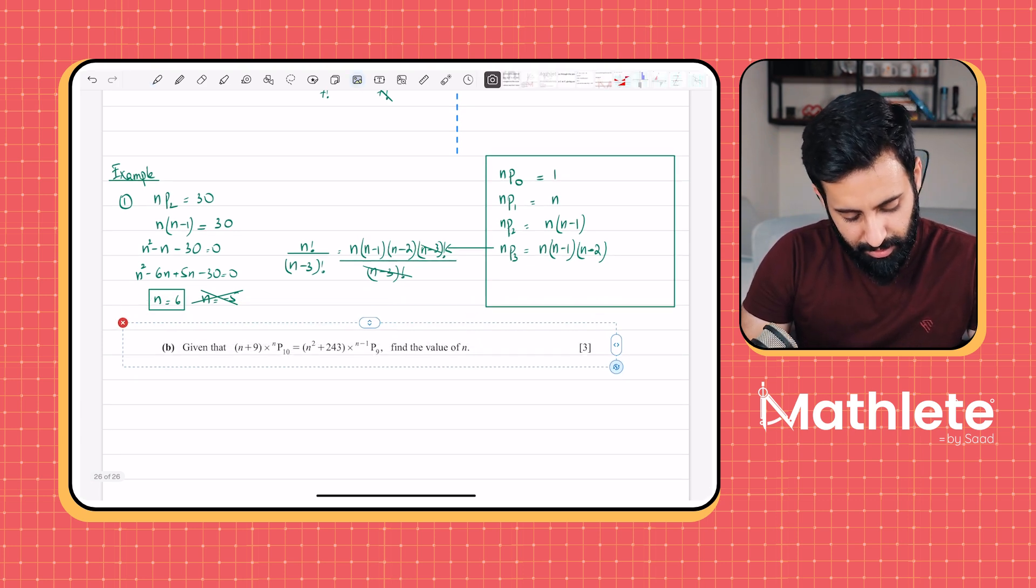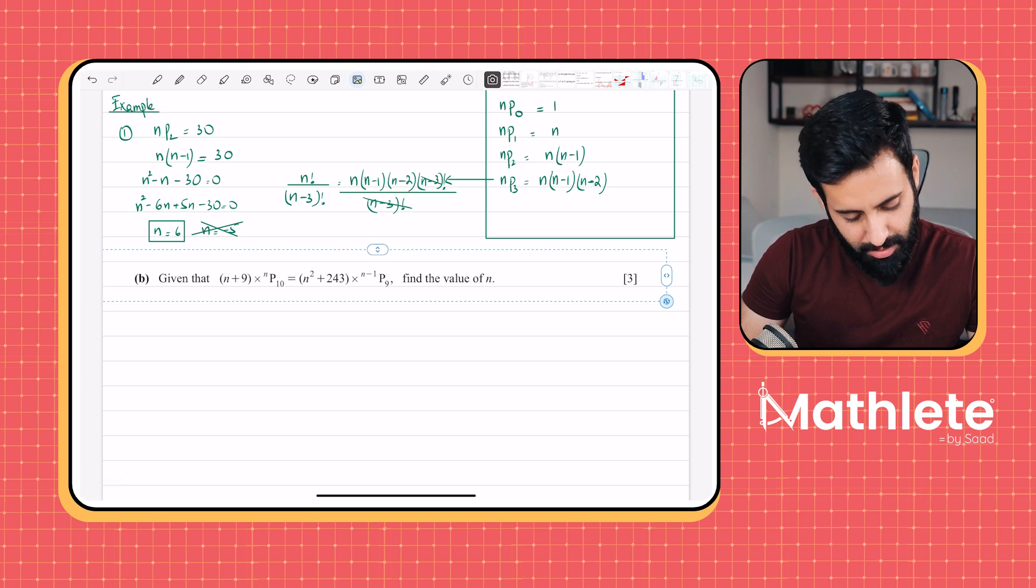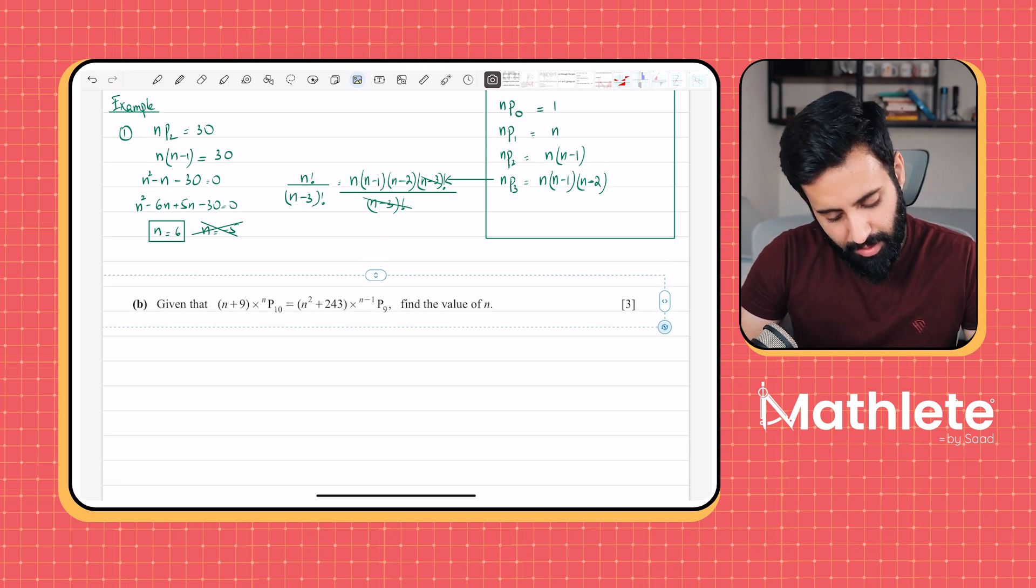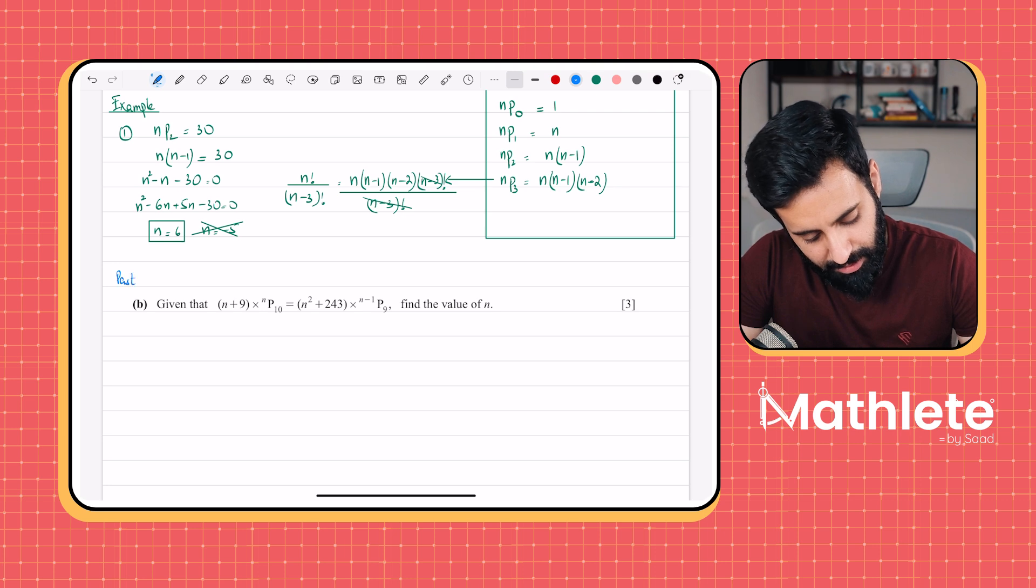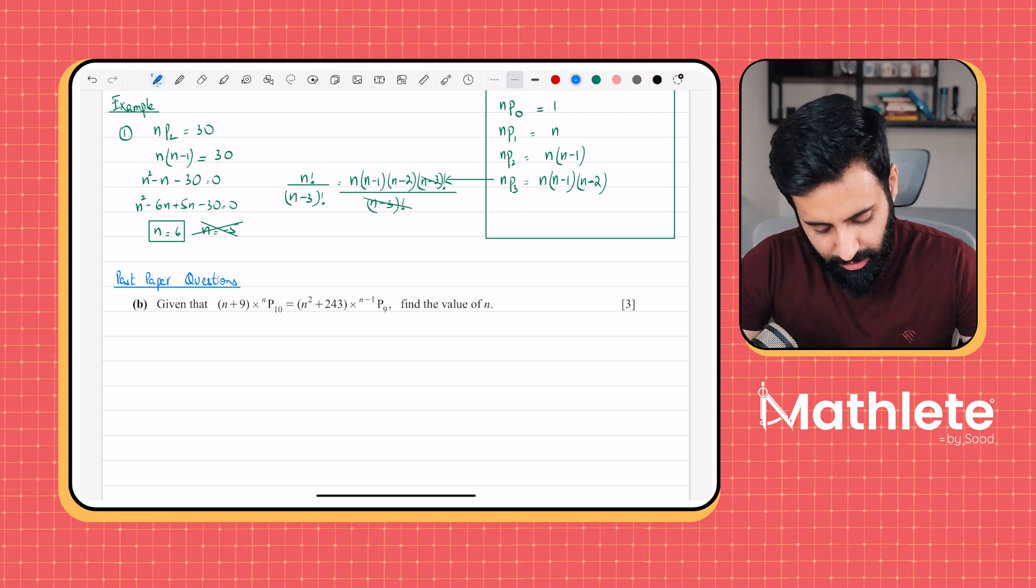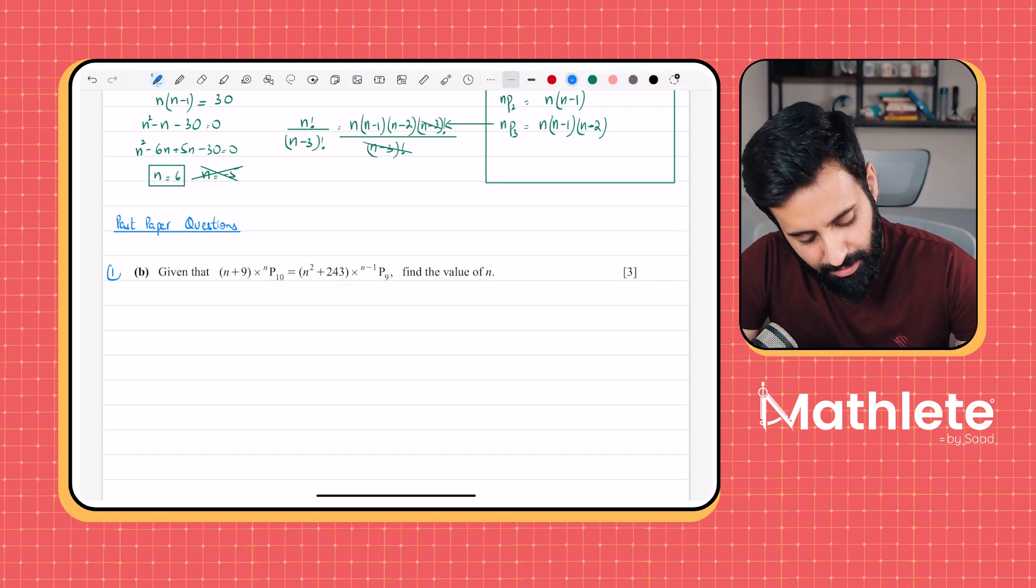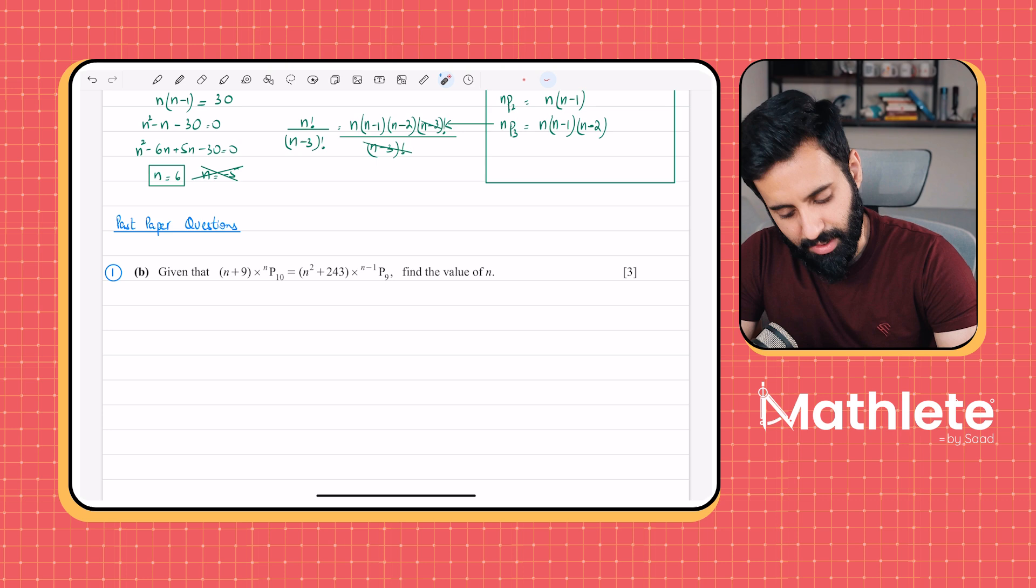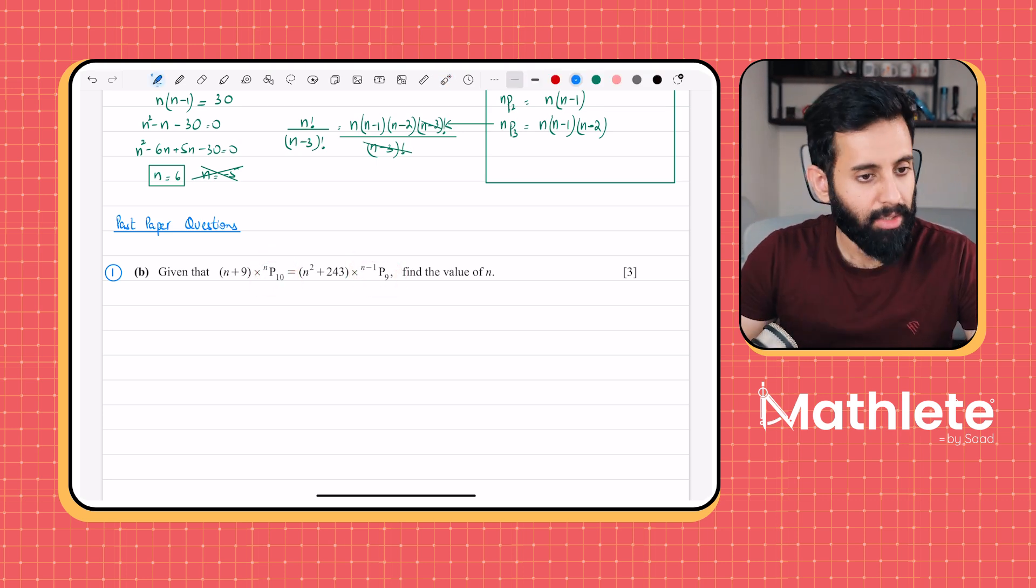Now I have over here a past paper question. We don't have a lot of past paper questions for this. In fact, I think this is just the one past paper question that we have. So I'm going to solve this. And in the meantime, I want you guys to read and decide on your own, whether you think I'm going to use the formula, or whether you think I'm going to do this directly. So I hope you've decided by now. And the answer is that I'm not going to do this directly. I am, in fact, going to use the formula. Why? Because we have NP10, and we have N minus 1 P9.